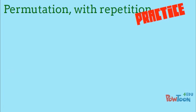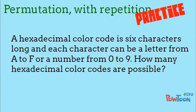Practice Problem. A hexadecimal color code is 6 characters long, and each character can be a letter from A to F or a number from 0 to 9. How many hexadecimal color codes are possible? Pause the video and figure it out.